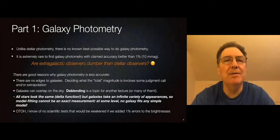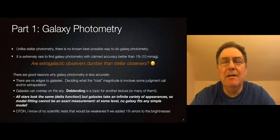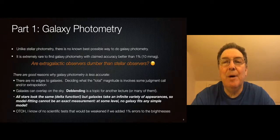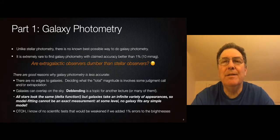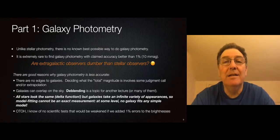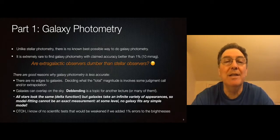In stellar photometry and astrometry, there is actually a best way to do things, which is equal to or equivalent to PSF fitting or model fitting. There is no such analogy in galaxy photometry, so we don't have a single best way of doing things. Galaxy photometry is really not at the level of development as stellar photometry. It's fairly rare, at least until very recently, to find catalogs of galaxy fluxes that claim accuracy better than 1% or 10 millimags.